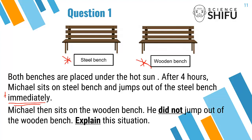In another situation, Micah then sits on the wooden bench and this time does not jump out — meaning he continues to sit on it. The question asks you to explain this situation. Many students who first join the class do not know how to apply the science knowledge to the question. For example, some write 'the steel bench is hotter than the wooden bench' — this doesn't apply any science knowledge at all; it just describes what happened without explaining why.